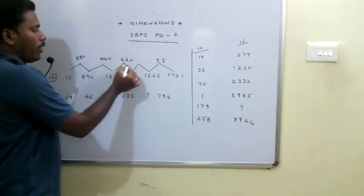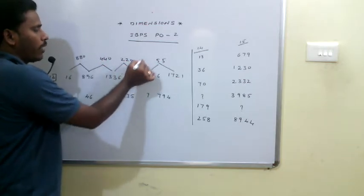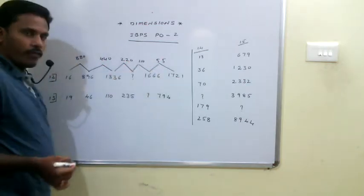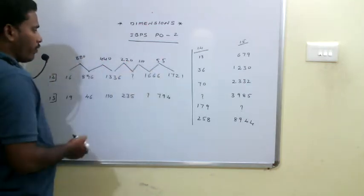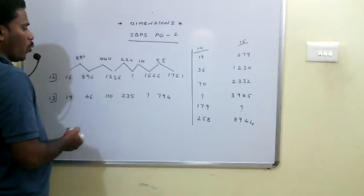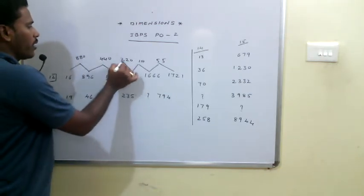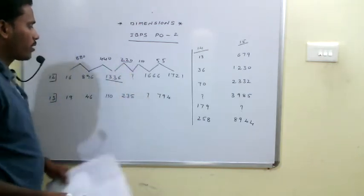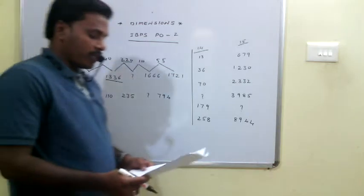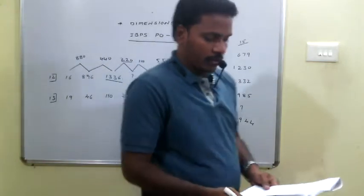440 low half is 210, 210 low half is 110, 110 low half is 55. So this number must be 220, and 1336 plus 220 will give us 1556 as the missing term of the series.